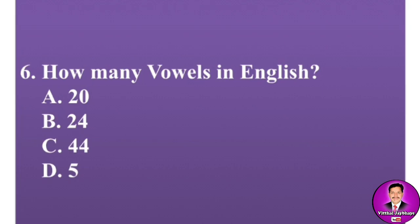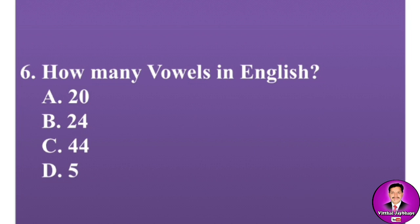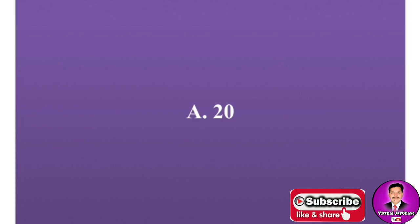Next MCQ: How many vowels are there in English? Options are: A, 20; B, 24; C, 44; D, 25. The correct answer is A — there are 20 vowels in English.